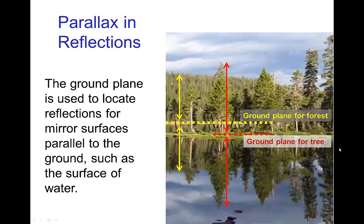So this is an effect of parallax and in order to formulate the correct location of everything in the mirror image, you have to use the ground plane when you have a mirror surface that is parallel to the ground, which you have with the surface of water. So you notice that here by accounting for the location of the ground plane of the forest and the ground plane of these trees on the island, those are the corresponding mirror images on the surface of the water.